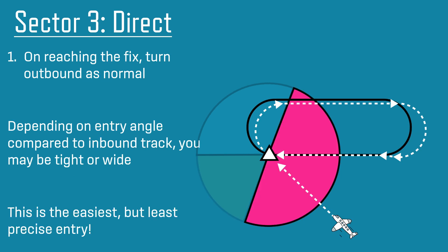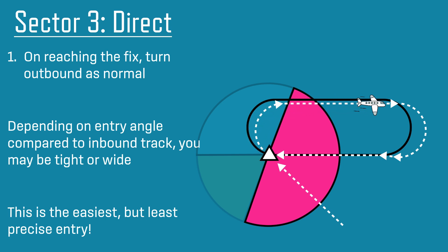Sector 3 is the direct entry. On reaching the fix, simply turn outbound in the direction of the hold — you are now in the hold. This may seem like the simplest entry, but it is the least precise. Large angles of entry compared to the inbound course can lead to you being very tight in the hold. There are ways to adjust for these extreme direct entries, which will be covered in another video.